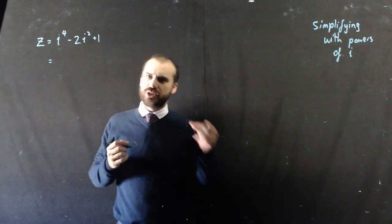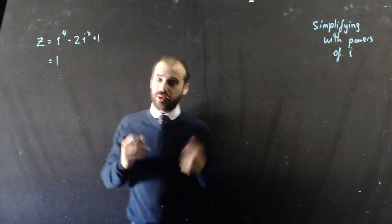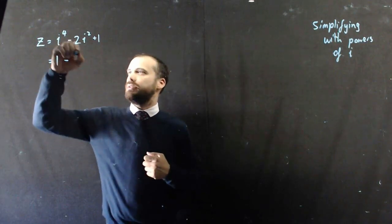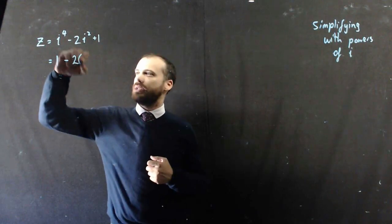i to the 4, you should just have these memorized, i to the 4 is 1. Now, negative 2 times i squared. Well, i squared is negative 1.